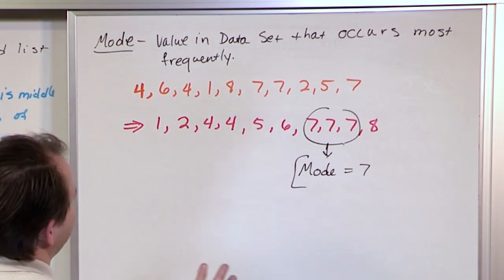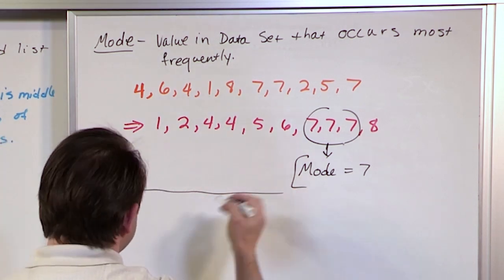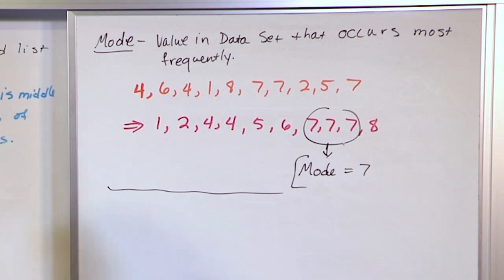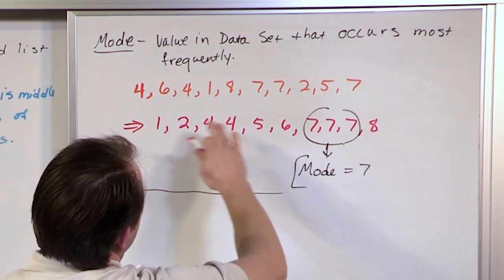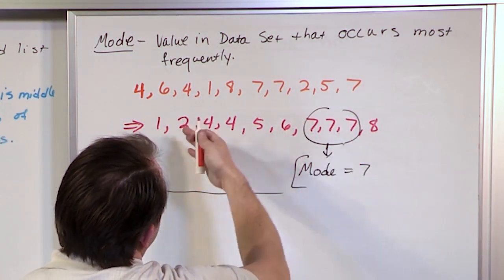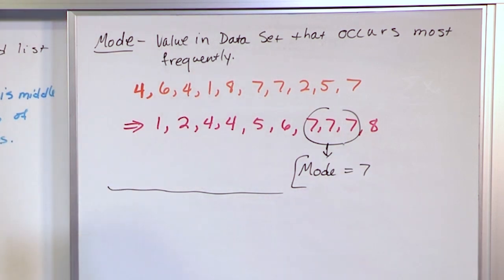I'm going to do a couple additional examples with mode because there are a couple of different quick little cases. So this is the easiest case. When you order it and you clearly have one number that is repeated more often than the others, that is the mode.